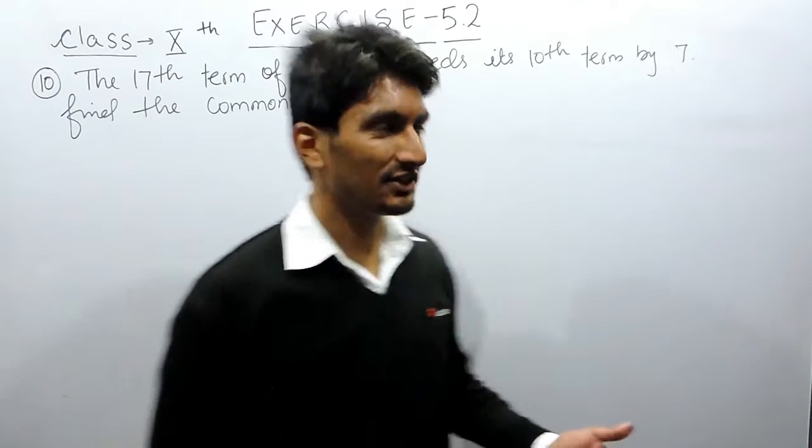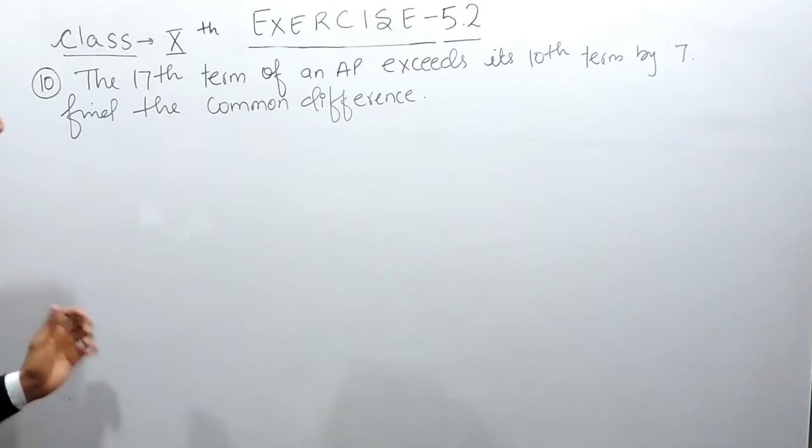Hello everyone, in this video we are going to solve question number 10 of exercise 5.2. The question says the 17th term of an AP exceeds its 10th term by 7. You have to find the common difference.